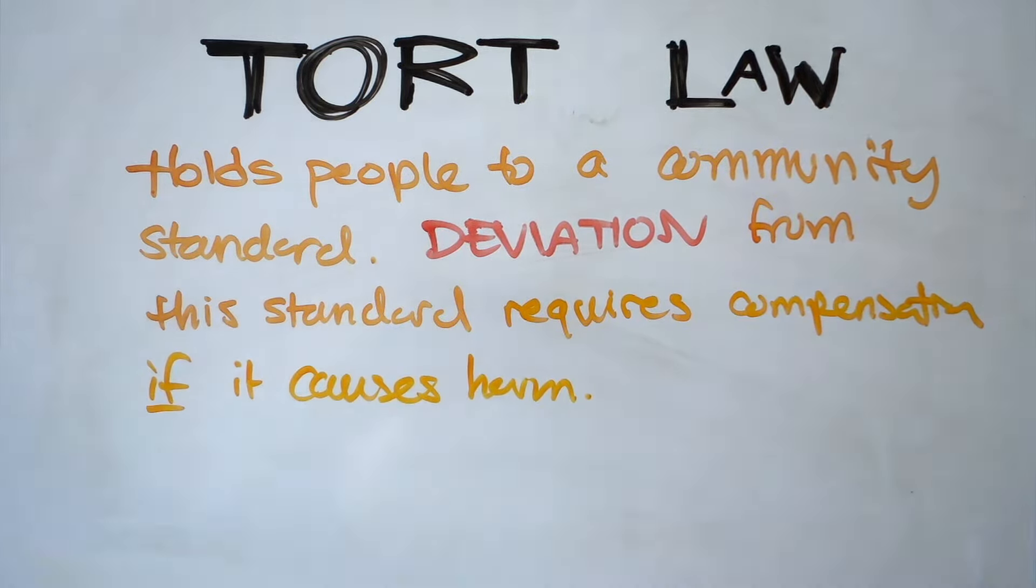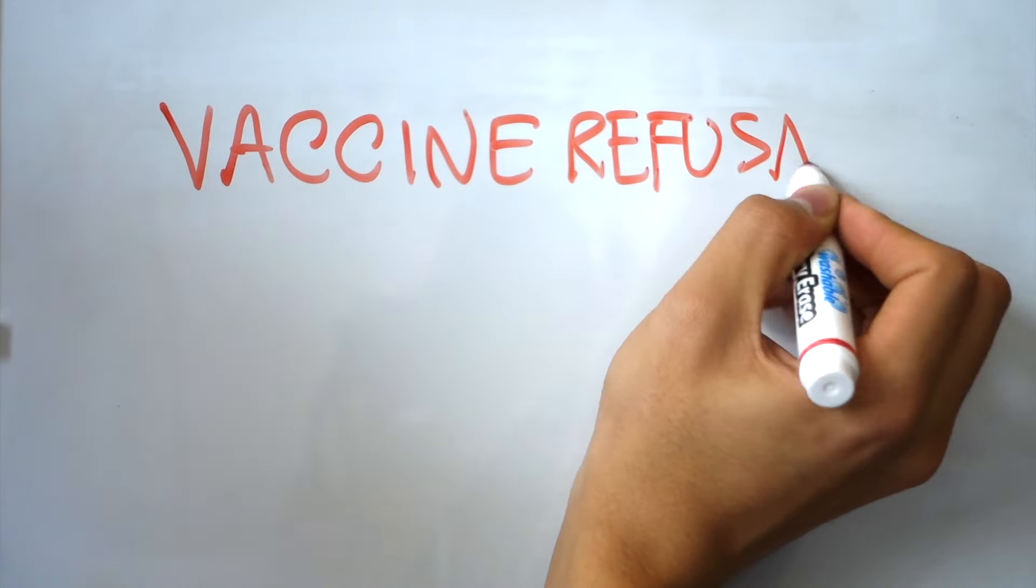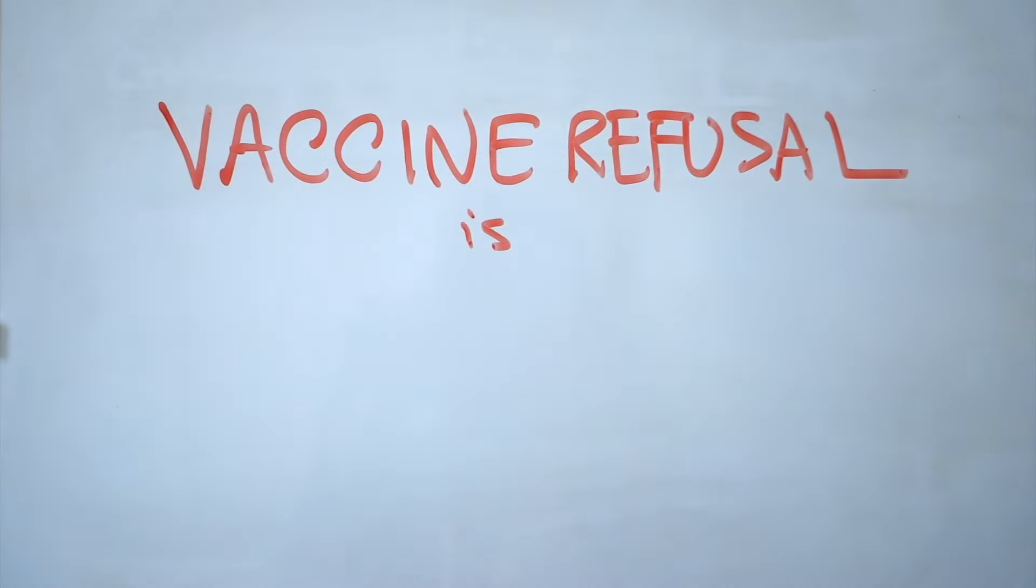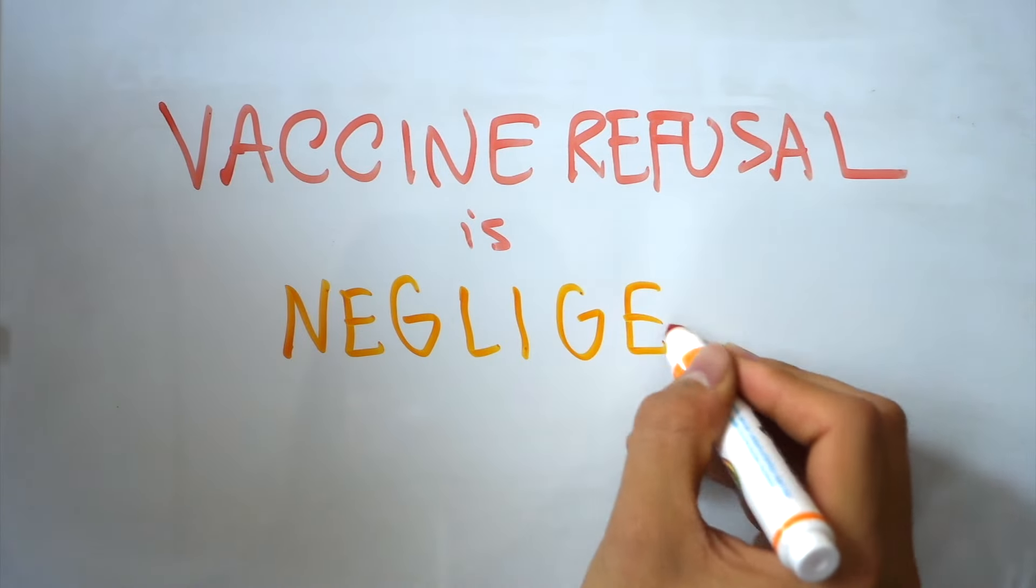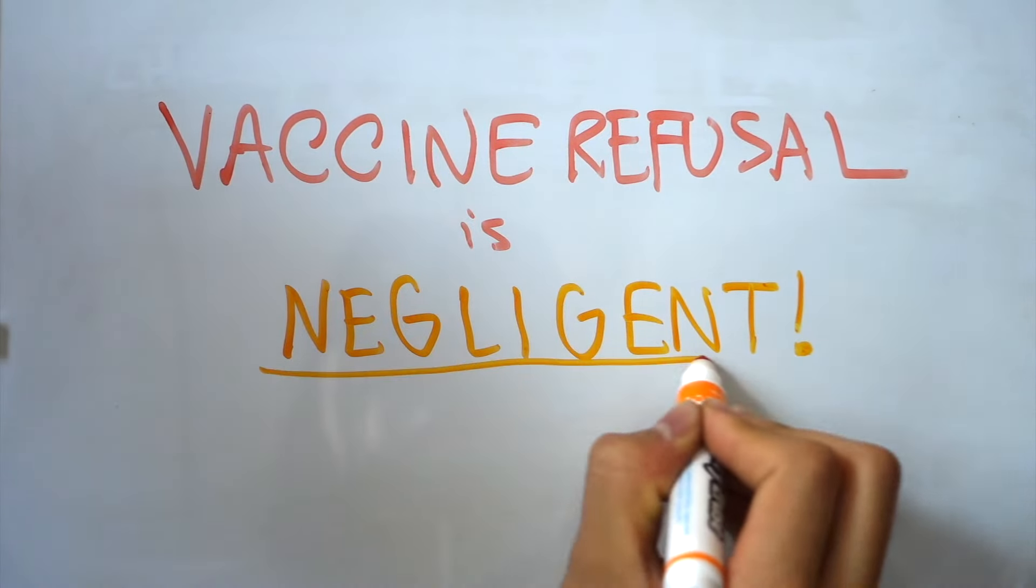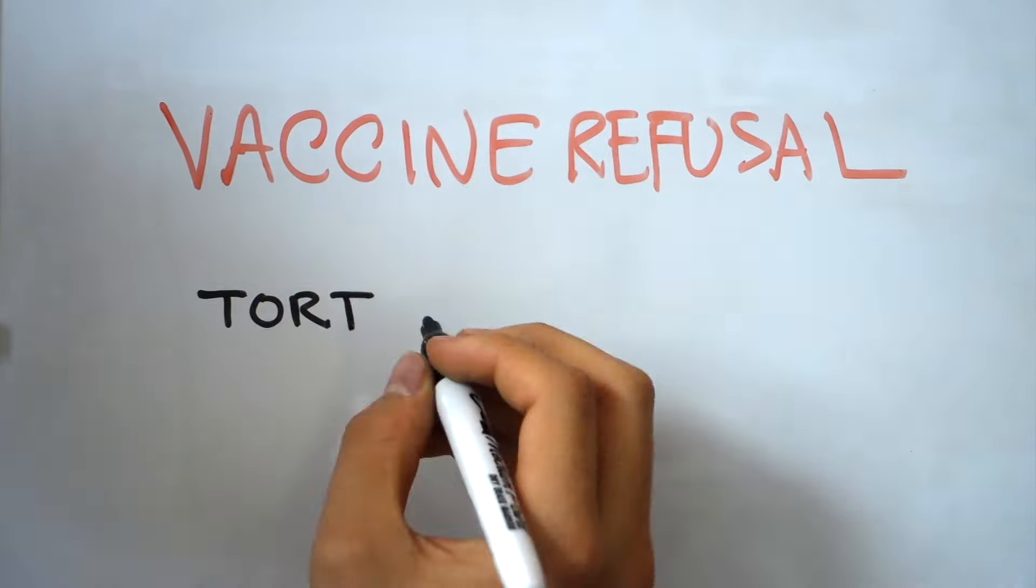Vaccine refusal fits perfectly into this definition of negligence because the medical and scientific communities have mostly agreed that the risks of vaccinating are significantly smaller than the risks of non-vaccinating. So, people who don't vaccinate are actually choosing the larger risk, making an unreasonable choice. When someone else is harmed because of this unreasonable choice, the conditions of tort liability apply.